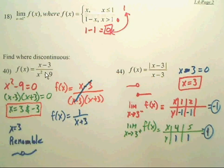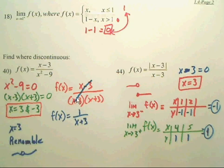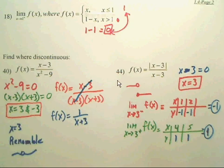To find discontinuities, set the denominator equal to zero, because you cannot have zeros in the denominator. Solving gives x equals 3 and x equals negative 3. Negative 3 is a removable discontinuity — a hole — because if you factor and cancel the common factor, it becomes a hole. For another example, setting the bottom to zero gives x equals 3, which is a discontinuity. Taking the limit from each side, one side approaches negative 1 and the other approaches 1, so the two sides don't agree and the limit at 3 does not exist.